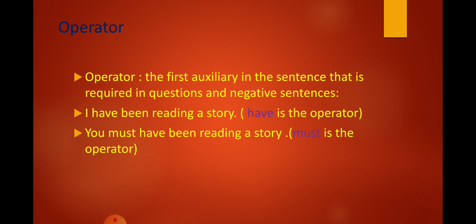If we take the verb 'been', it is also an auxiliary verb. Both 'been' and 'have' are auxiliaries. But can we say 'I have been not reading a story'? The answer is no. Why? Because 'been' is not the operator here — 'have' is the operator. And also we cannot say 'Been I have reading a story?' because 'been' here is not the operator.